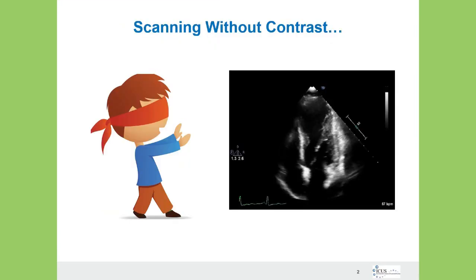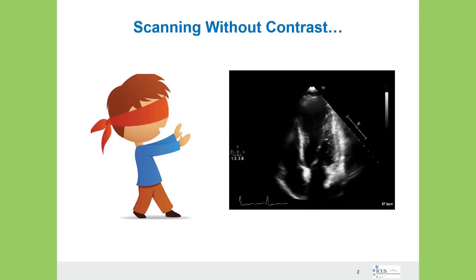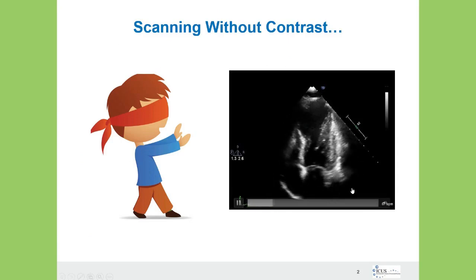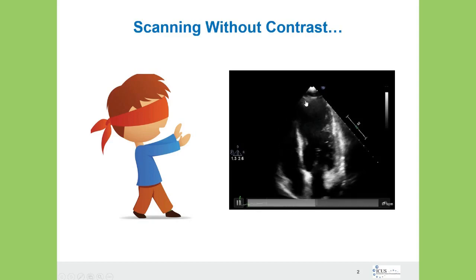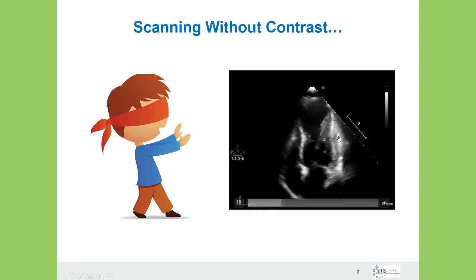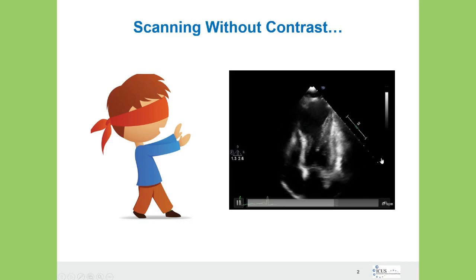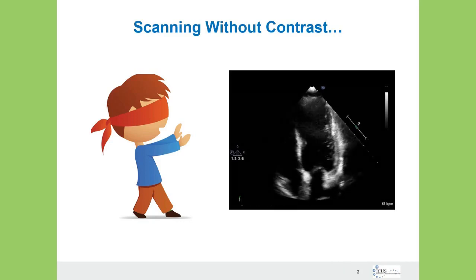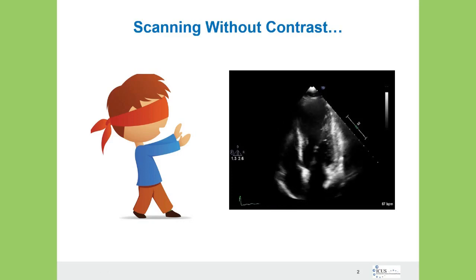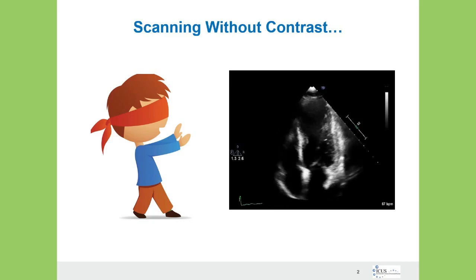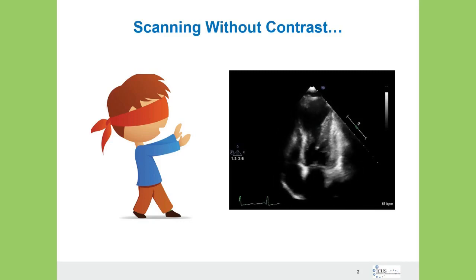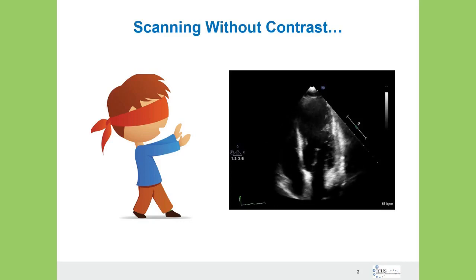If we're scanning without contrast, it's kind of like we're blinded, because there can be things hiding in the ventricle. For instance, this ventricle here where you can see that there's an apical wall motion abnormality. We may think we see good endocardial definition or that we can rule out a thrombus, but even though the equipment gets better and better with near field resolution, we still see artifacts or things that make us suspicious — especially in this patient — as to whether they have a thrombus hiding there. We can't be certain unless we use contrast to totally rule those out.